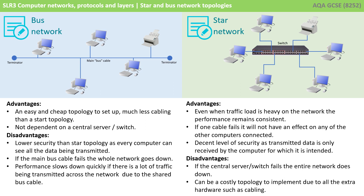With a star network, even when traffic load is heavy, performance remains consistent. If one of the cables fails, it doesn't affect the other computers connected. There's a reasonable level of security as transmitted data is only received by the intended computer down its dedicated cable. However, if the central server or switch fails, the entire network goes down, and it can be a more costly topology to implement due to all the extra hardware and cabling required.